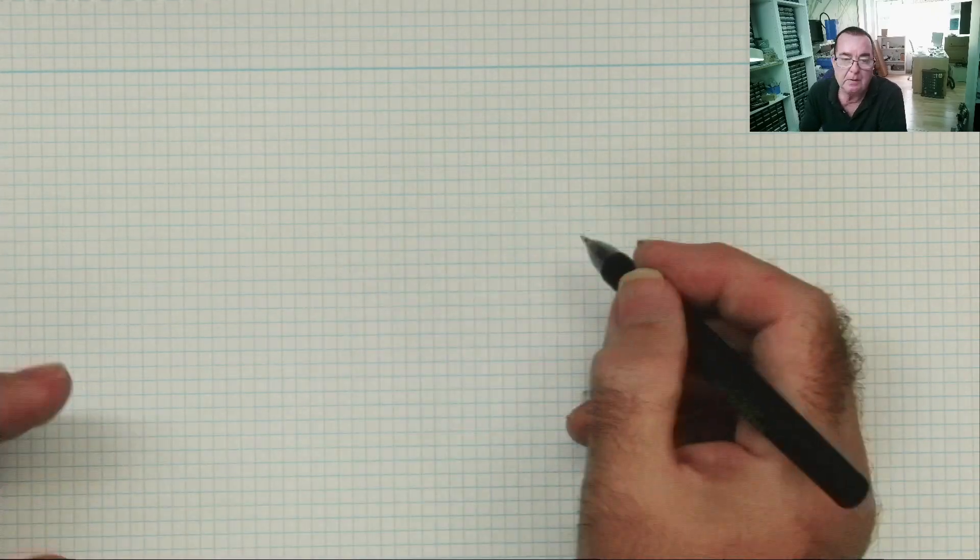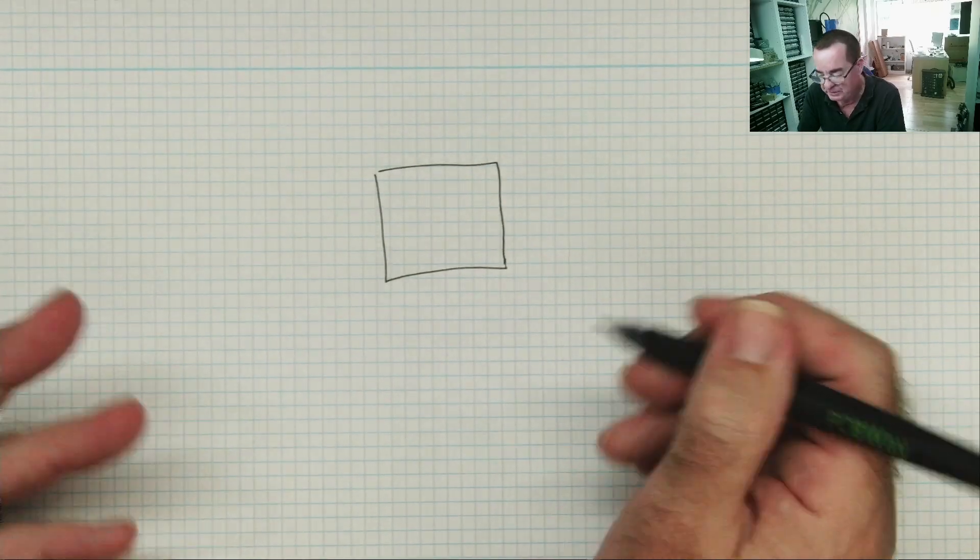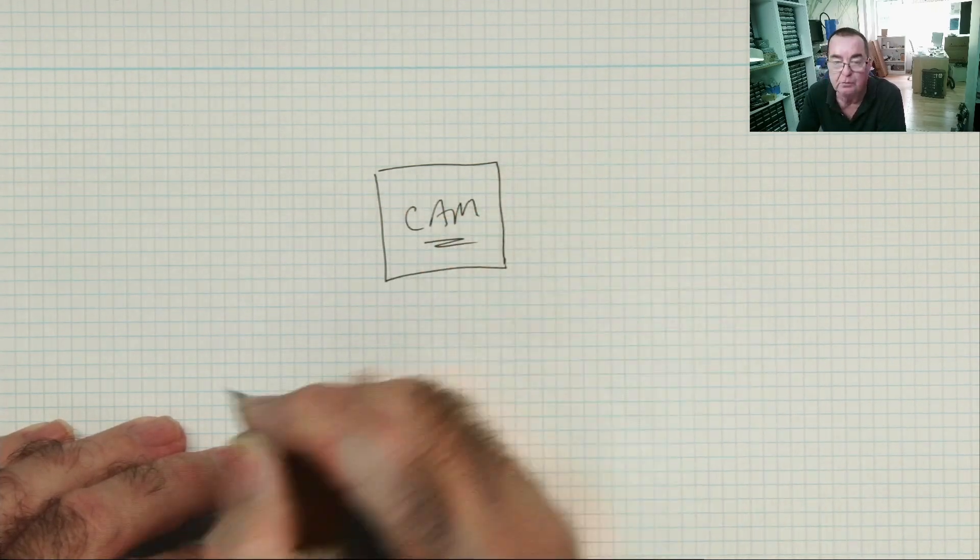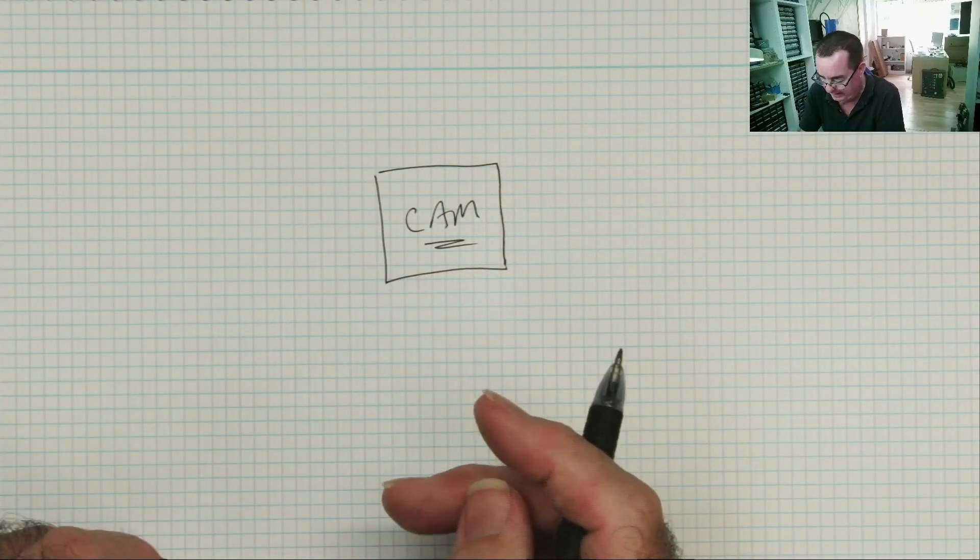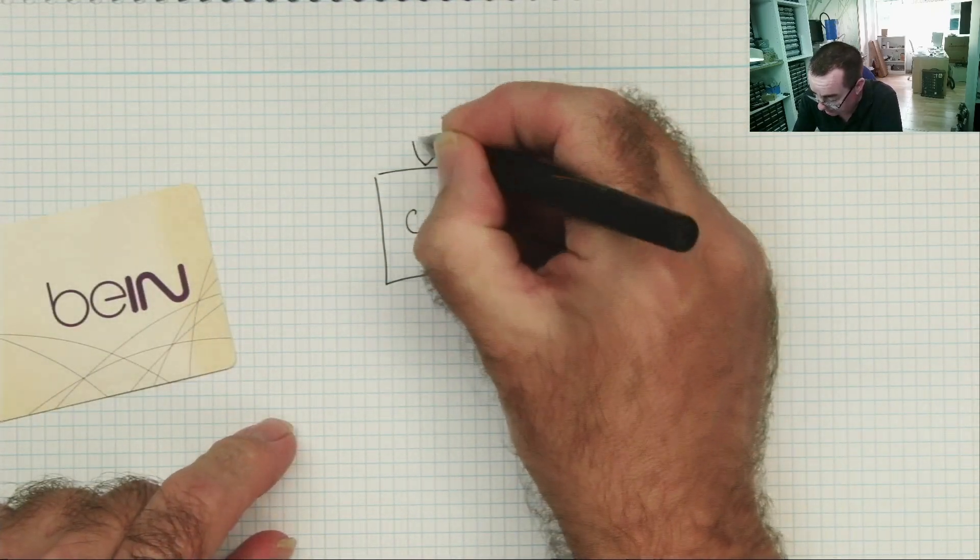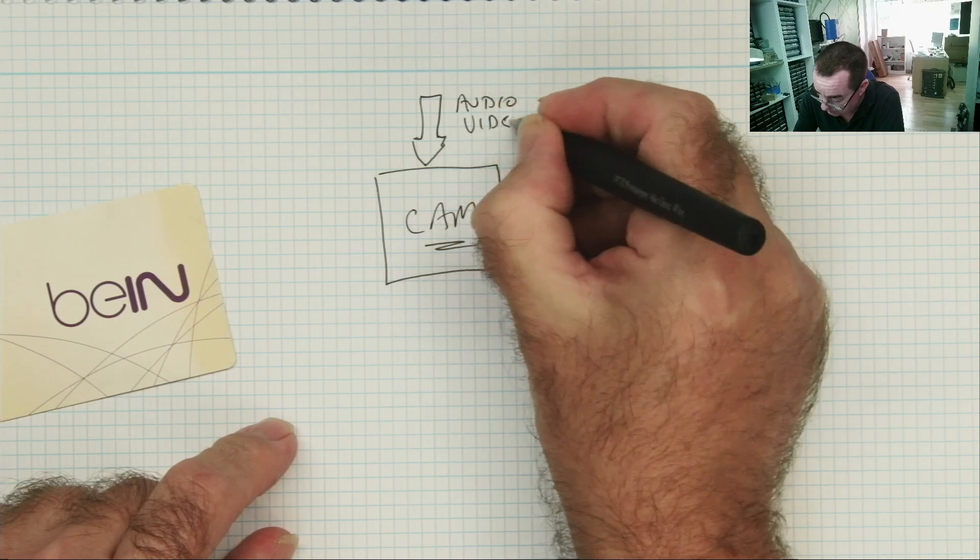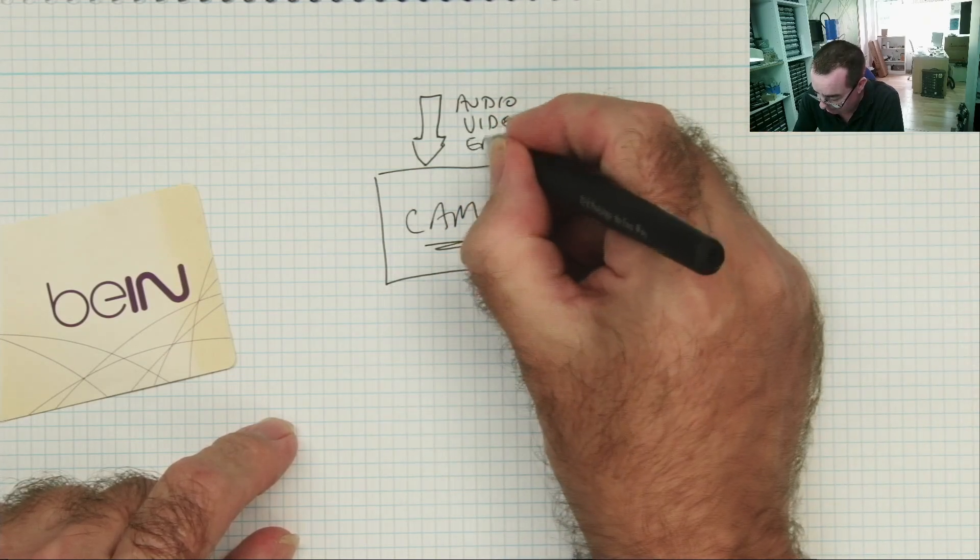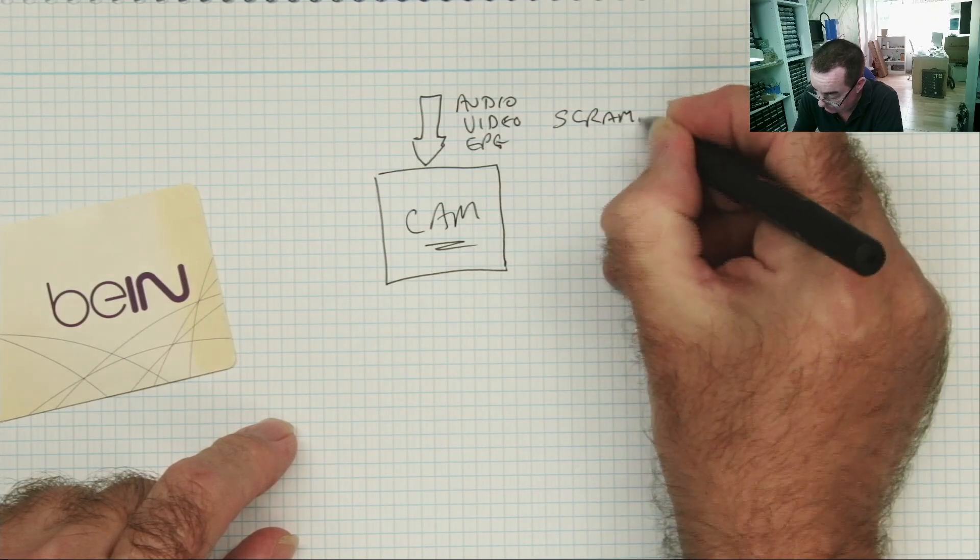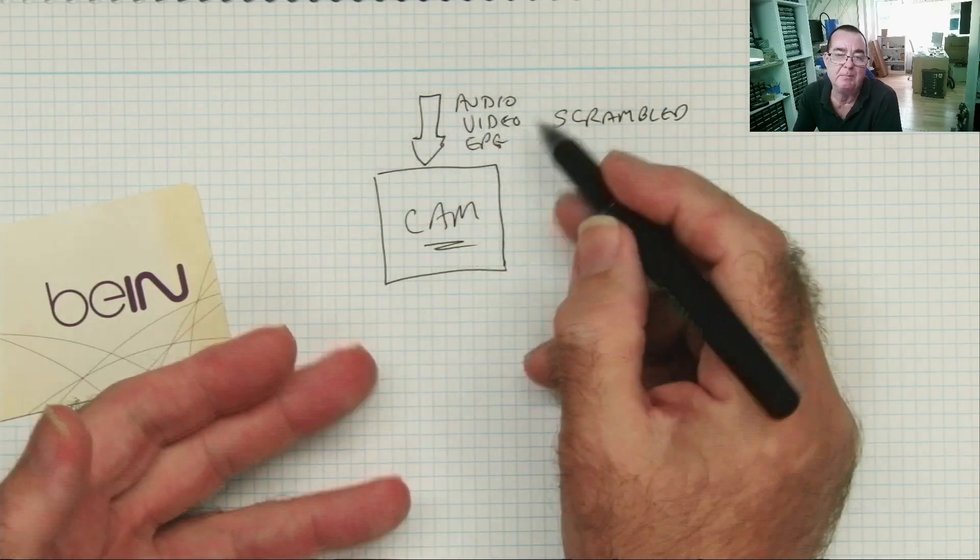The first misconception is that the smart card decrypts the video. And the fact is, it doesn't decrypt the video. The processor in here is far too low powered to be able to actually decrypt the video. The video is decrypted by the box. So back in the day, the video was decrypted by something called a conditional access module, which was basically a module that plugged into your satellite receiver.